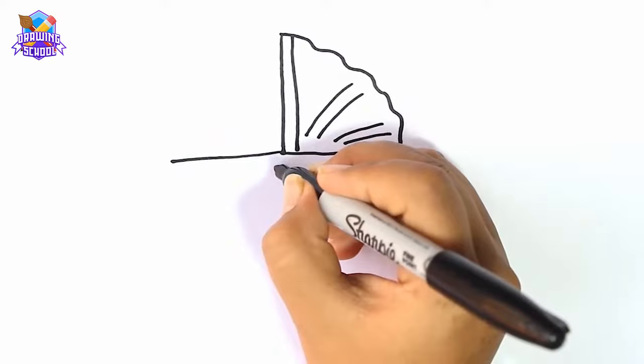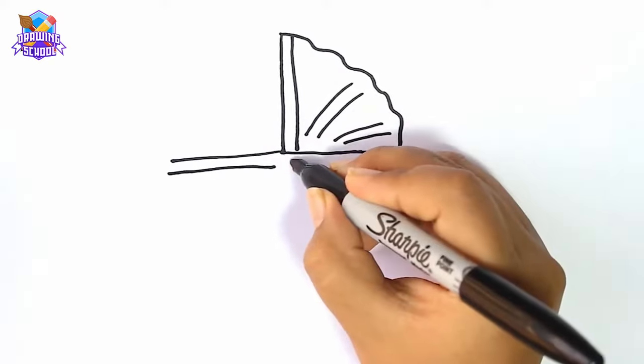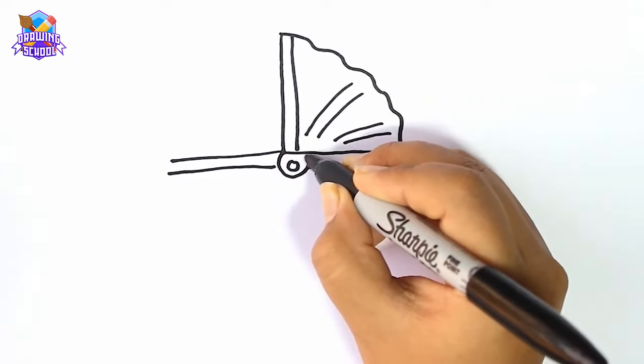Now we draw a line right next to the first one we did, a little circle here, close it.